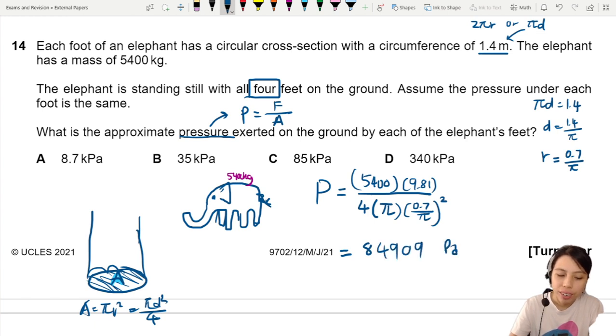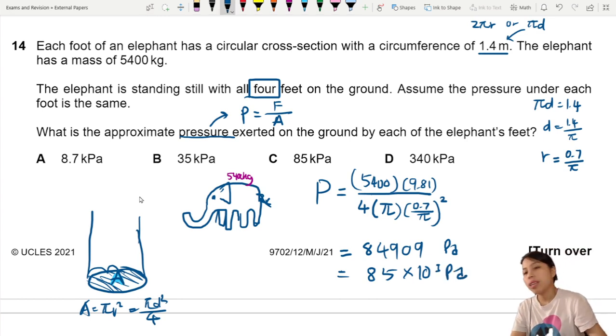84909 pascals. If I write it in standard form, that will be 8.5 times 10 to the... okay, since all the answers are in kilopascals, let's do 85 times 10 to the power of 3 pascals, otherwise known as 85 kilopascals. So the best choice we can choose for the pressure on each elephant's foot is a whopping 85 kilopascals. Don't get stepped on by an elephant. It's gonna hurt real bad.